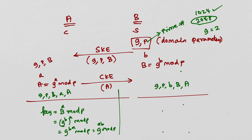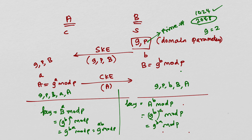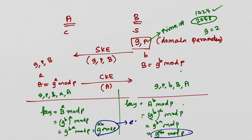On the other side, Bob derives the key similarly. He has received public key A from Alice, so he computes A^b mod P, which equals (G^a)^b mod P = G^(ab) mod P. The important lesson here is that both sides end up with the exact same key. That's why we call this a key agreement protocol — both sides agree on a common key using a certain mathematical formula.